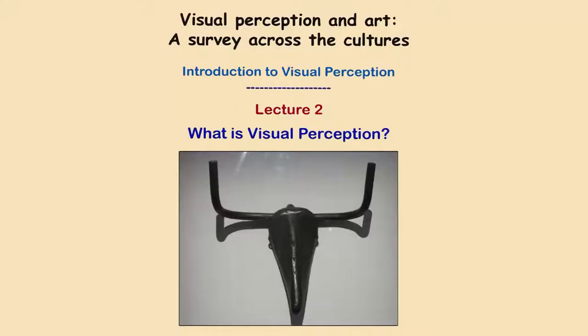Hello viewers, welcome to the MOOCs online course on visual perception and art: a survey across cultures. This is the second lecture of this week, and in this lecture we are supposed to encounter the term visual perception in a slightly technical way — what exactly this term means and what its implications are.